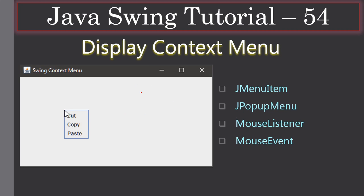We want to display the menu item at the mouse right-click location, which means our frame window needs to implement MouseListener as well as handle MouseEvents. The pop-up menu is owned by the frame window, and that frame window also listens for mouse events so that we can track where the mouse cursor is and display the context menu at that location.